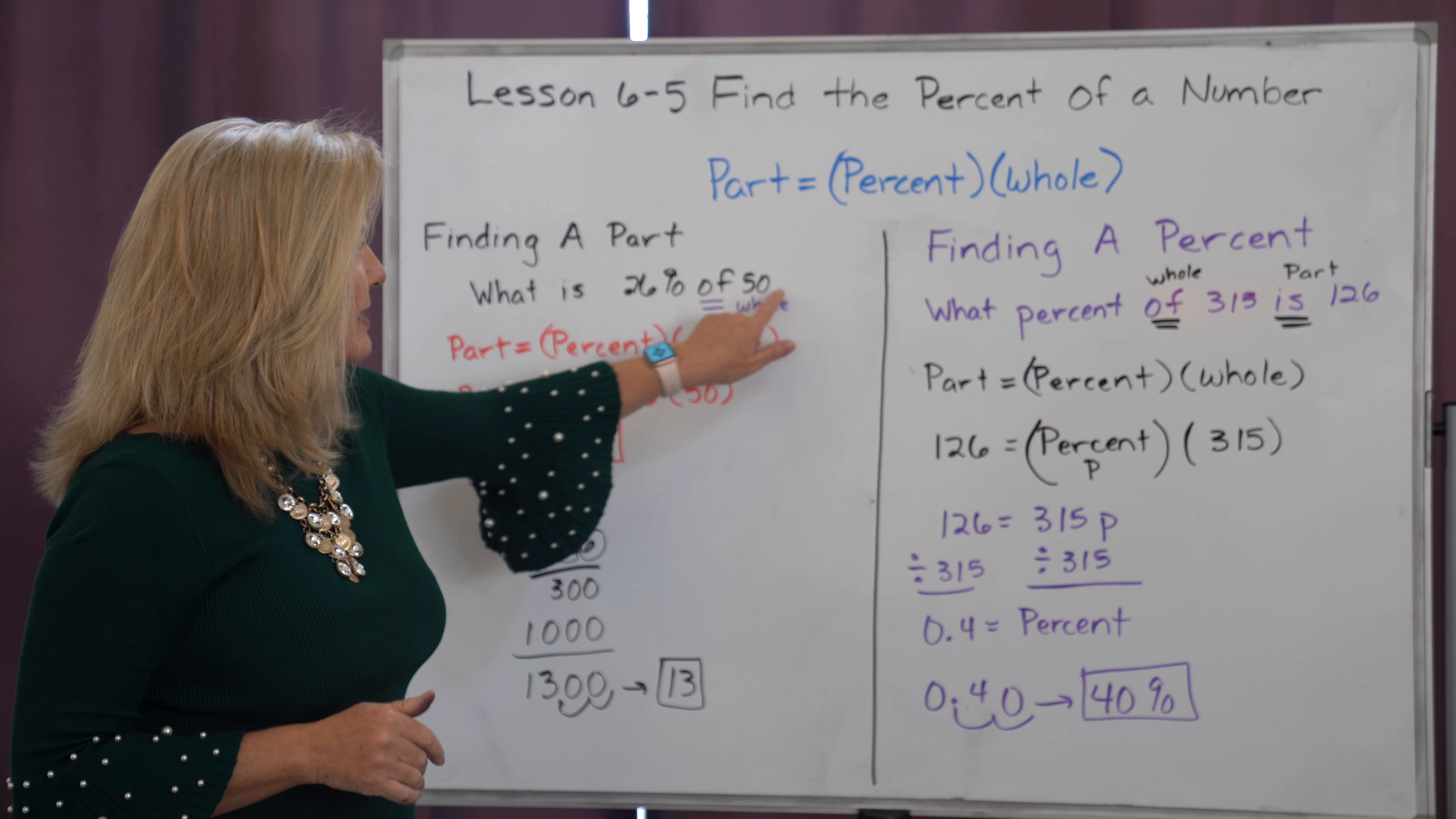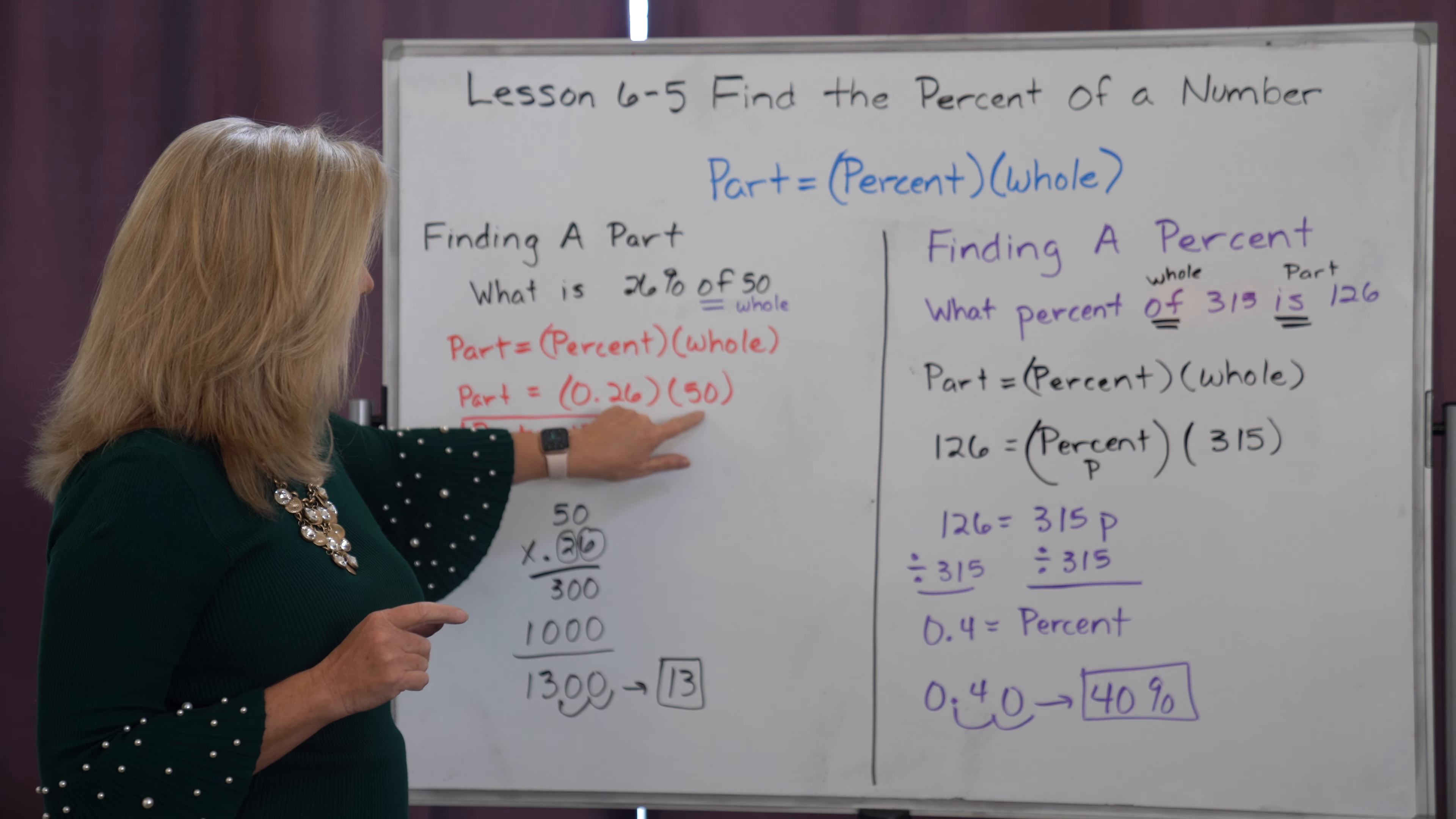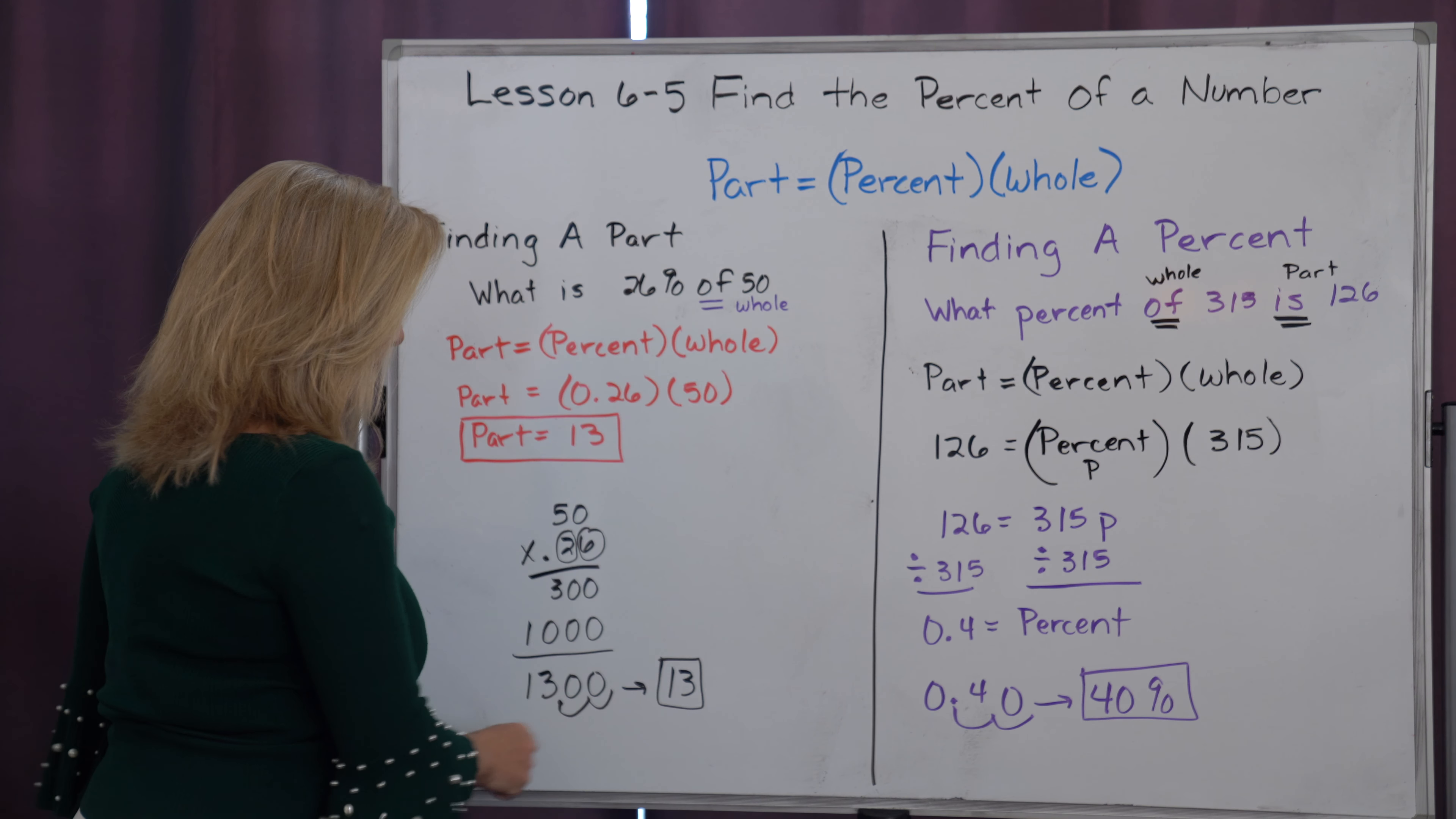Now because 50 follows the word of, and I know of always shows me the whole, I'm going to put 50 in place of the whole. So now all I need to do is multiply 50 times 26 hundredths and whatever that answer is going to be, that is going to be my part.